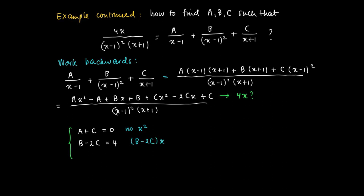That's the coefficient of x. Well, besides 4x, there's no constant. So we have as a constant minus a plus b plus c, which should then be equal to 0.